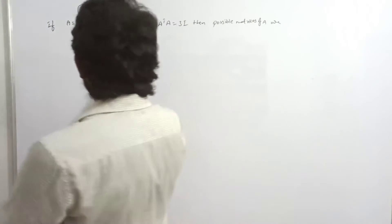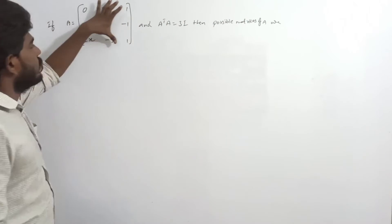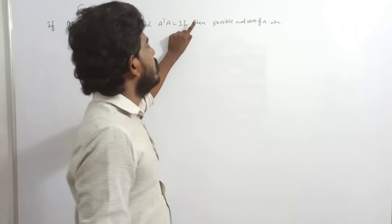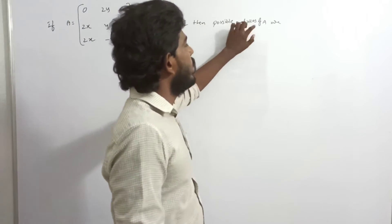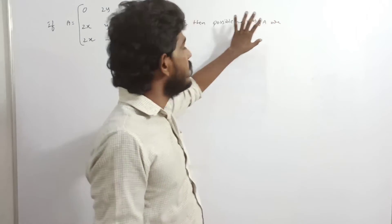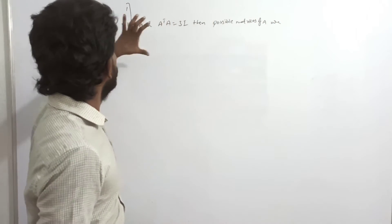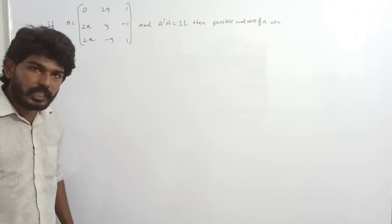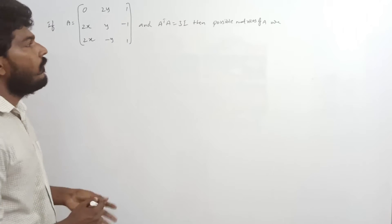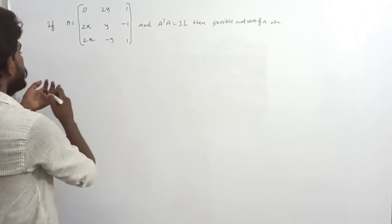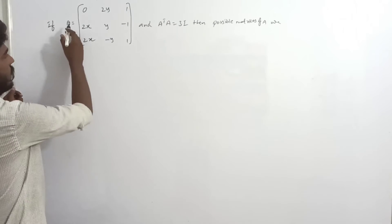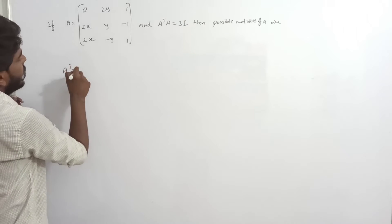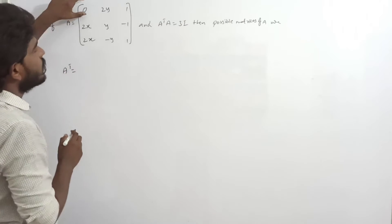Next: A is shown and A transpose into A equals 3A. Then how many possible matrices A exist? First, A transpose equals 3A. What is A transpose? Rows and columns are interchanged.